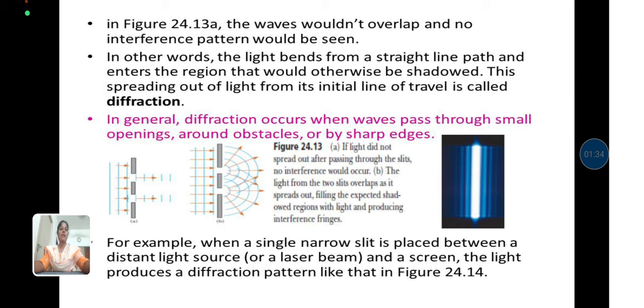In general, diffraction occurs when waves pass through small openings, around obstacles, or by sharp edges. In this picture, we clearly note that if the light did not spread out after passing through the slits, no interference would occur.